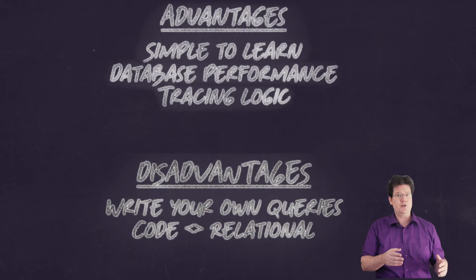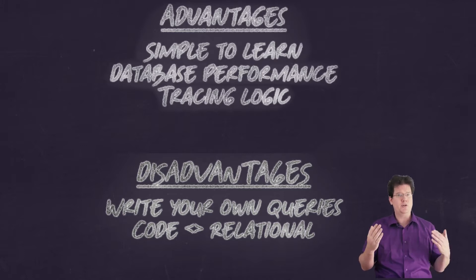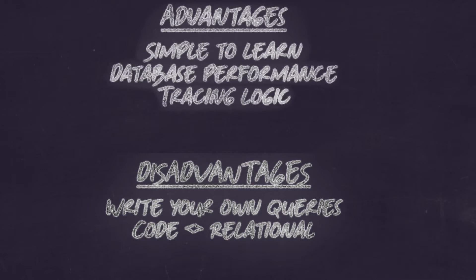The disadvantages are: one, that you have to write your own SQL queries into the code base; and two, related to that, the data in your code probably uses an object-oriented model while your database stores data using a relational model. Those aren't the same, and some developers — even very good ones — can find it mentally jarring to switch between data models and languages when writing code.